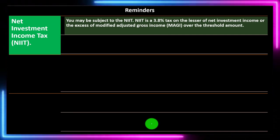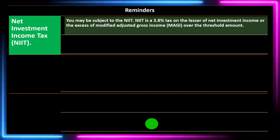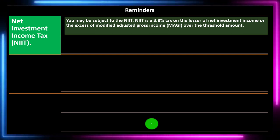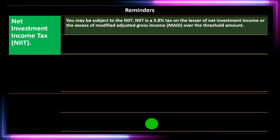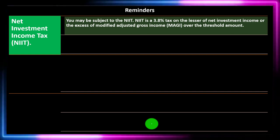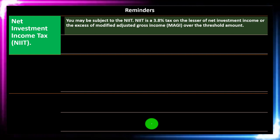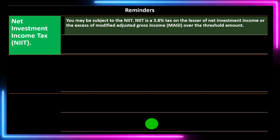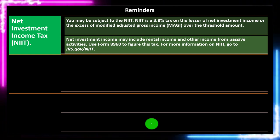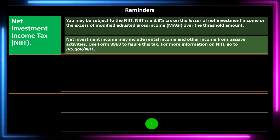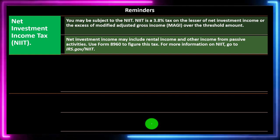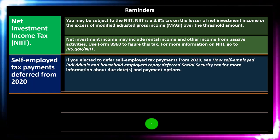Reminders: the Net Investment Income Tax (NIIT). You may be subject to the NIIT, which is a 3.8% tax on the lesser of net investment income or the excess of modified adjusted gross income (modified AGI) over a threshold amount. Net investment income may include rental income and other income from passive activities. Use Form 8960 to figure this tax. For more information on the NIIT, go to the IRS website.